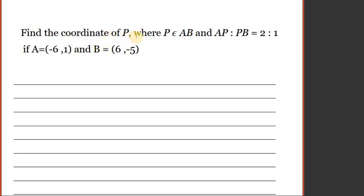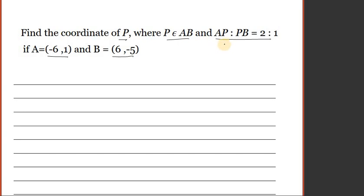Find the coordinate of P, where P belongs to line segment AB. The ratio AP to PB is 2 to 1. The coordinate of A is (-6, 1) and B is (6, -5). Let's draw a sketch of this quickly.